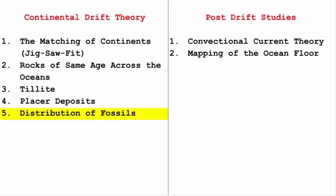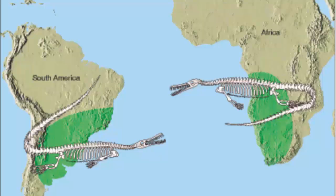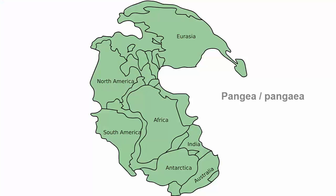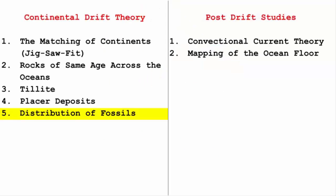The last point in continental drift theory talks about distribution of fossils. When identical species of plants and animals were found on different land masses, it made Wegener strongly believe that once upon a time there was only a single land mass, and with time it started splitting into different continents. These were the evidences that led Alfred Wegener to come up with the continental drift theory.